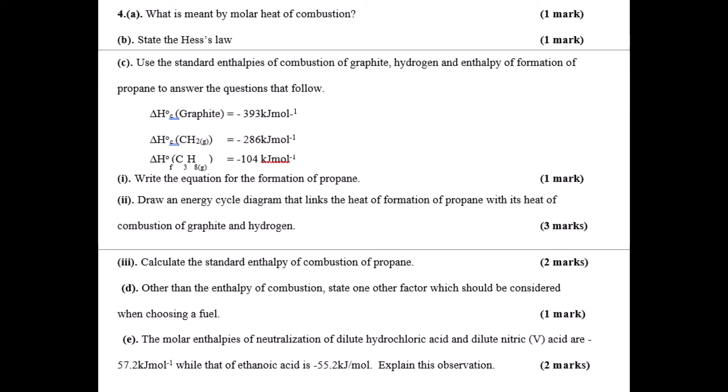Part C: you're applying Hess's law to work out the enthalpy change of formation of propane. You're given the delta H combustion of graphite, heat of combustion of methane, and heat of combustion of propane. From that, work out the enthalpy change of formation of propane. Then draw the energy cycle diagram to show the heat of formation of propane and heat of combustion of hydrogen and graphite.